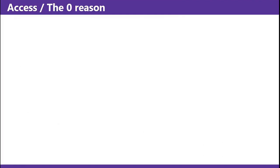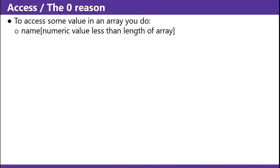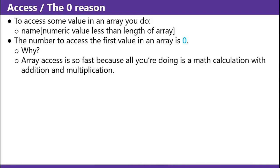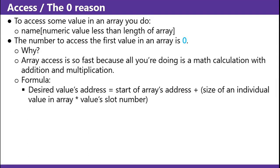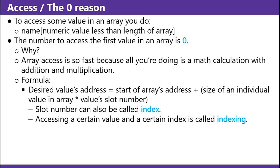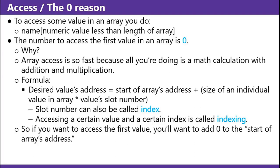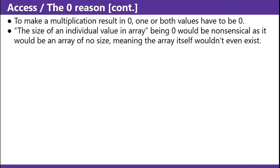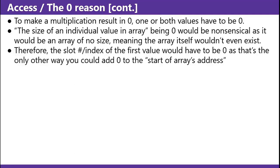The zero reason: to access some value in an array you do name square brackets numeric value less than the length of the array. The number to access the first value in an array is zero. Array access is so fast because all you're doing is a math calculation with addition and multiplication. The formula: desired value's address equals start of array's address plus size of an individual value in an array times the value slot number. Slot number can also be called index. To access the first value you want to add zero to the start of the array's address. The size of an individual value being zero would be nonsensical, therefore the slot number — or index — of the first value would have to be zero.